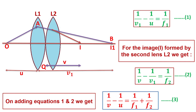On adding equations 1 and 2, we get: 1/V minus 1/U equals 1/F1 plus 1/F2. Suppose this is equation 3.